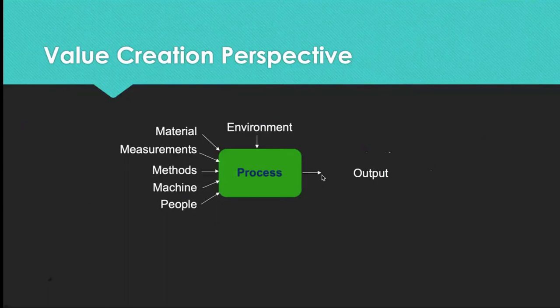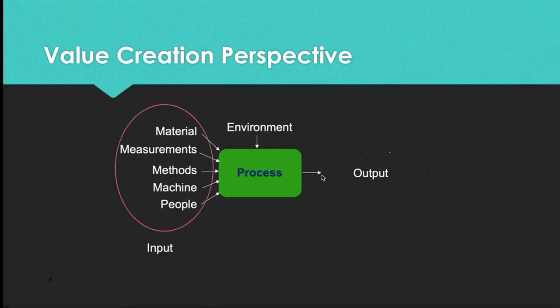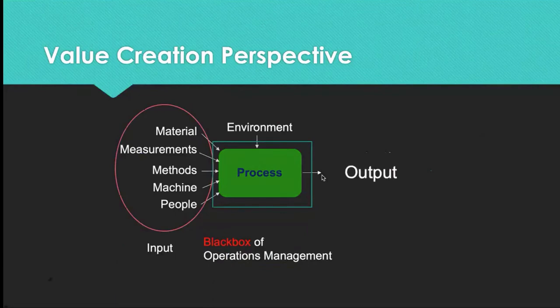Or the output could be timely treatment. For a stroke patient, time is life — the patient must be treated within three hours or they become permanently damaged. So time is a very important output of a healthcare system. We put in ambulances, doctors, nurses, hospital facilities, and medical equipment; all of this goes into the healthcare operation and comes out as quality care. This is called the black box of operations management.